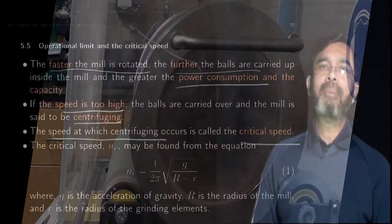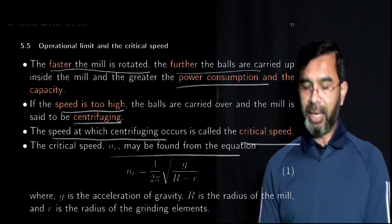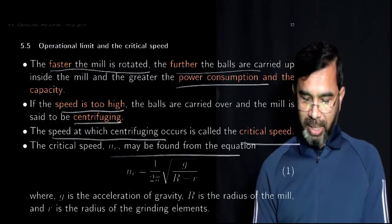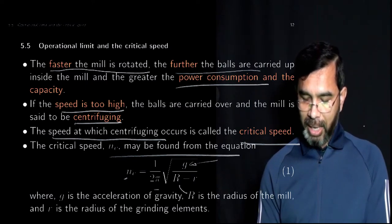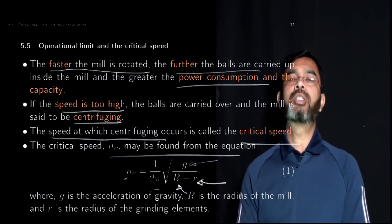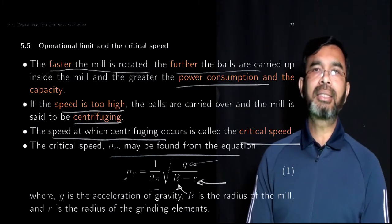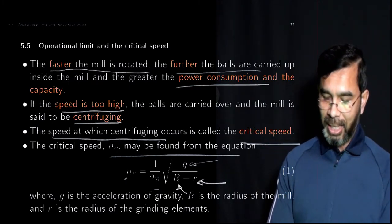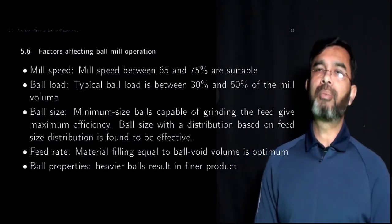This critical speed can be found by this equation where Nc equals one over two pi, square root of g divided by (R minus r). G is the gravitational acceleration, R is the radius of the mill, and small r is the radius of the balls. As the mill size increases, the critical speed will decrease. Along with the mill speed, there are other factors that affect the operation of a ball mill.